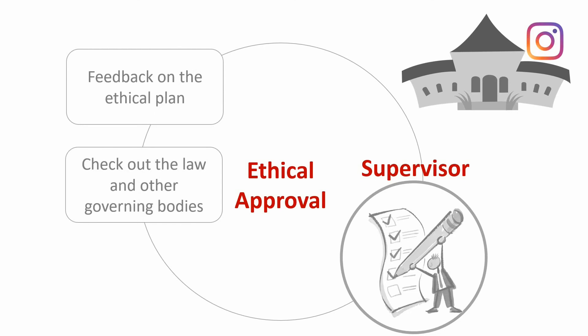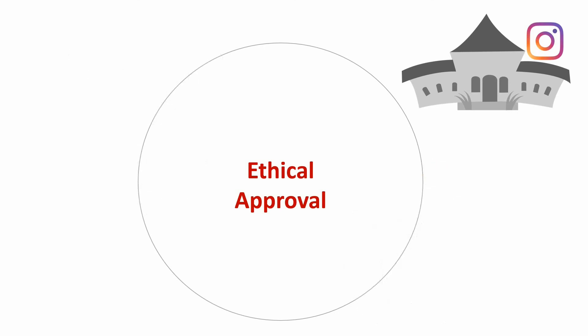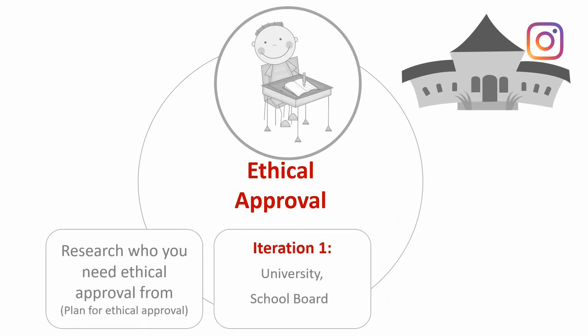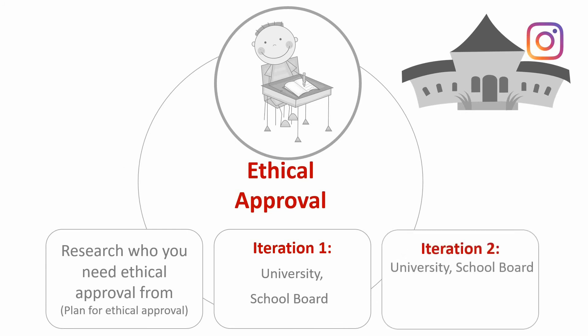Coming back to the ethical approval scenario: once the supervisor has given you their two cents, you now need to make adjustments. After doing some more research, you realize that you certainly missed a couple of things. So in your second draft, you say: I need ethical approval from the university, the school board, the parent of the student if they are under the age of 18, the student themselves if they are of legal age, and I need approval from the department of education.